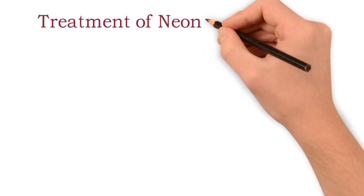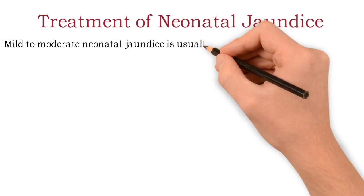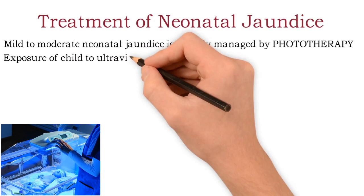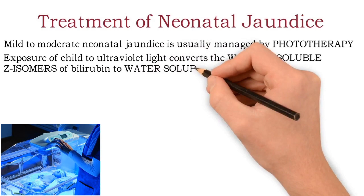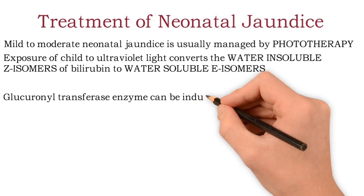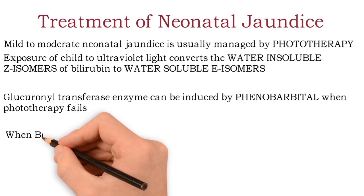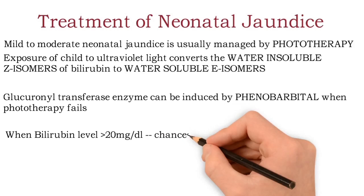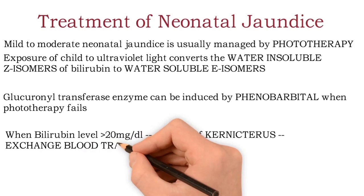For treatment of neonatal jaundice: mild to moderate cases are managed by phototherapy — exposure to ultraviolet light converts the water-insoluble Z isomer of bilirubin to the water-soluble E isomer. Glucuronyl transferase enzyme can also be induced by phenobarbital if phototherapy fails. When bilirubin level rises to 20 to 25 mg per deciliter, there is risk of permanent brain damage (kernicterus), and exchange blood transfusion is the only option.